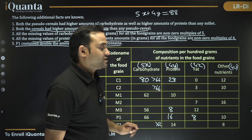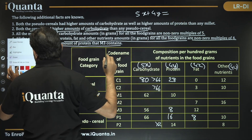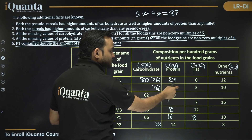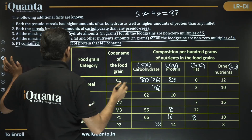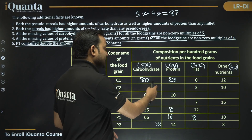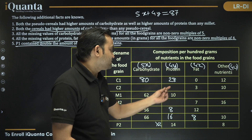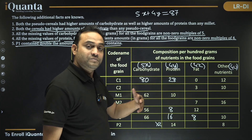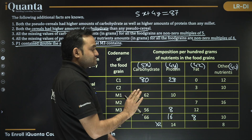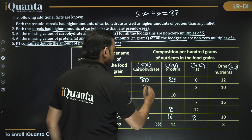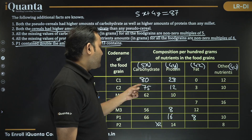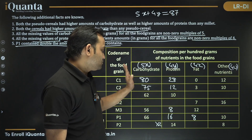For C2: the known values sum to 13, leaving 87. Since the remaining sum is odd, and protein (multiple of 4) is even, carbs must be odd. So C2 carbs must be an odd multiple of 5 greater than 66. Trying 75: remaining = 12, which works. Trying 85: remaining = 2, not a non-zero multiple of 4. So C2 carbs = 75, protein = 12.